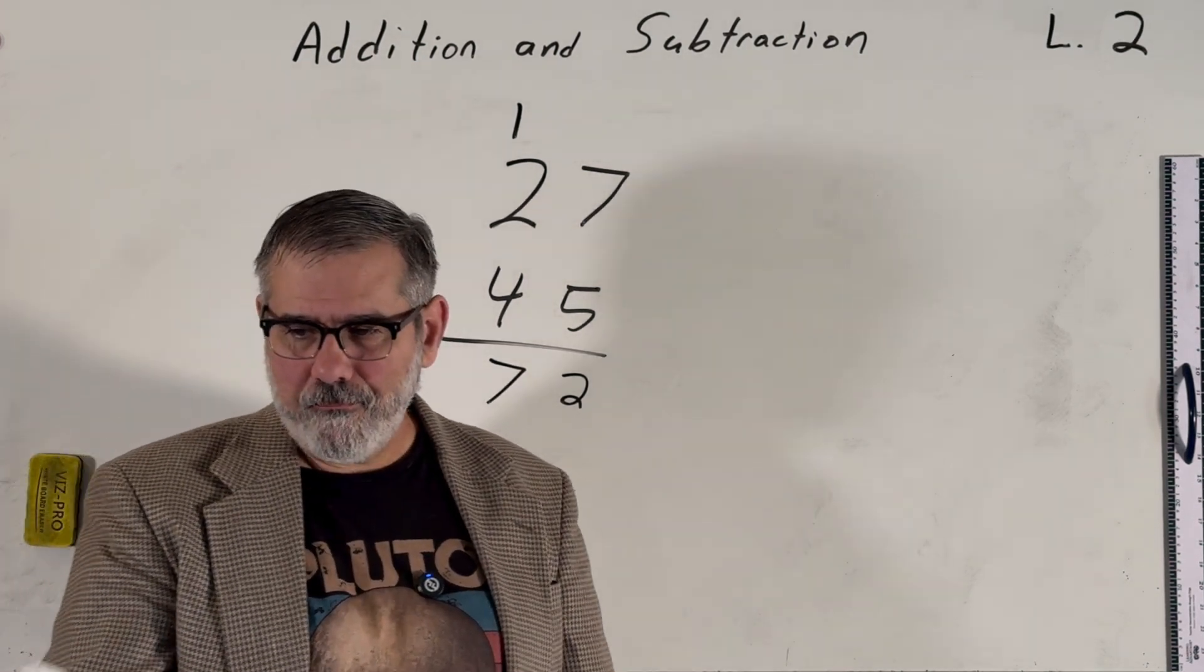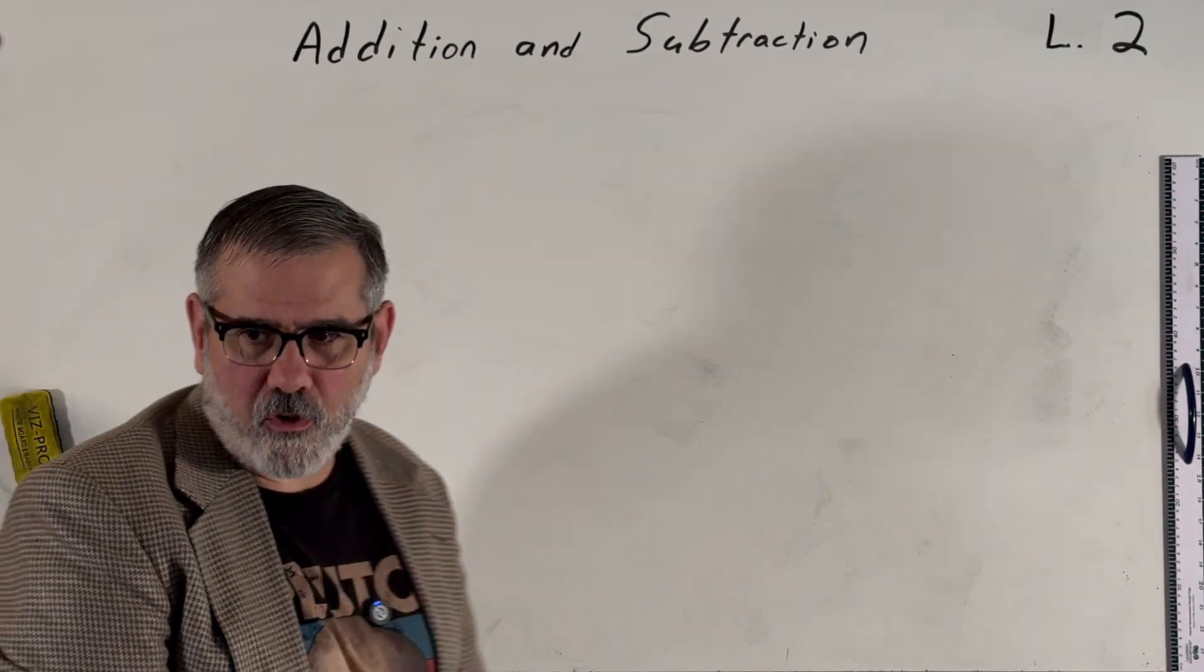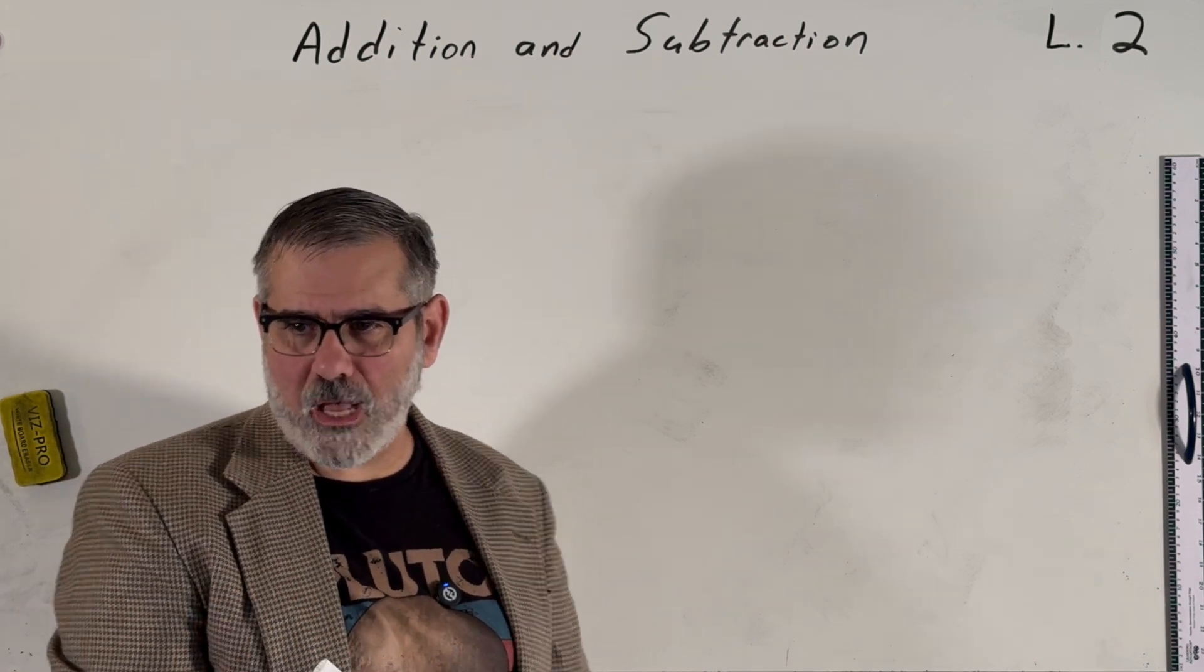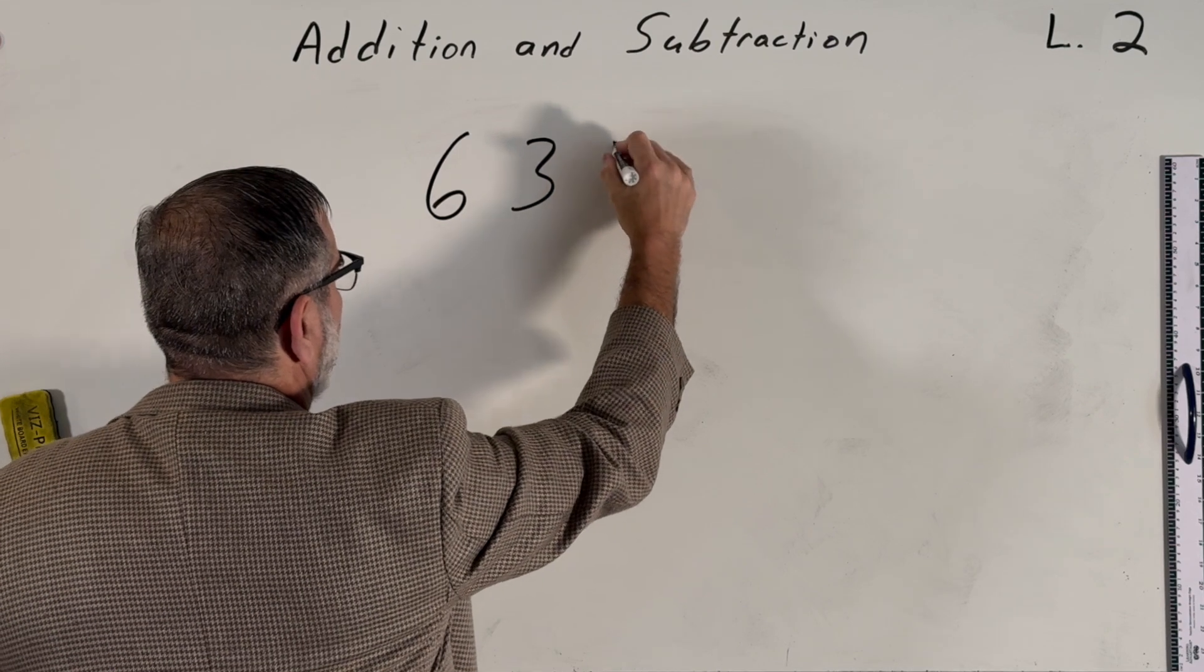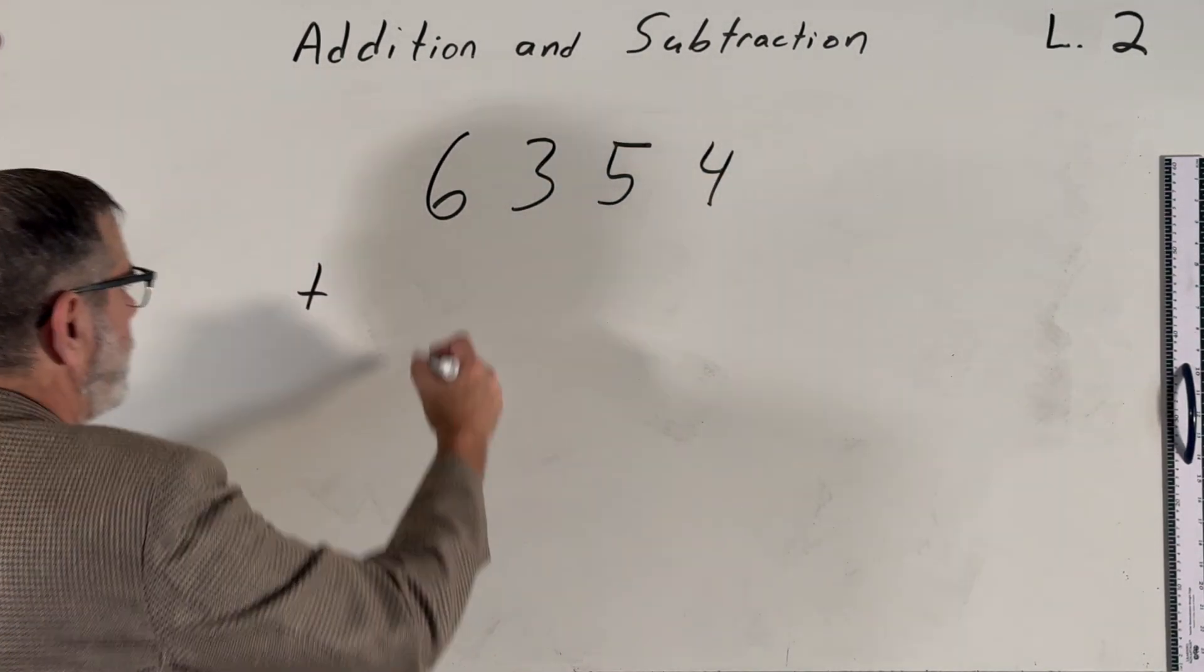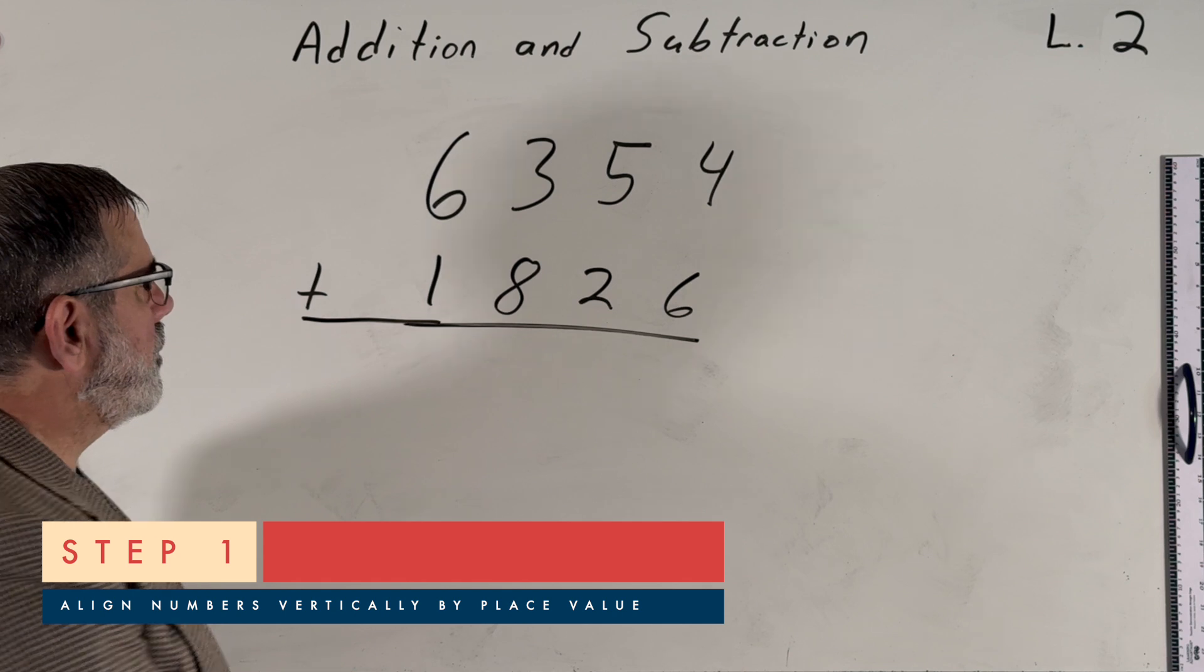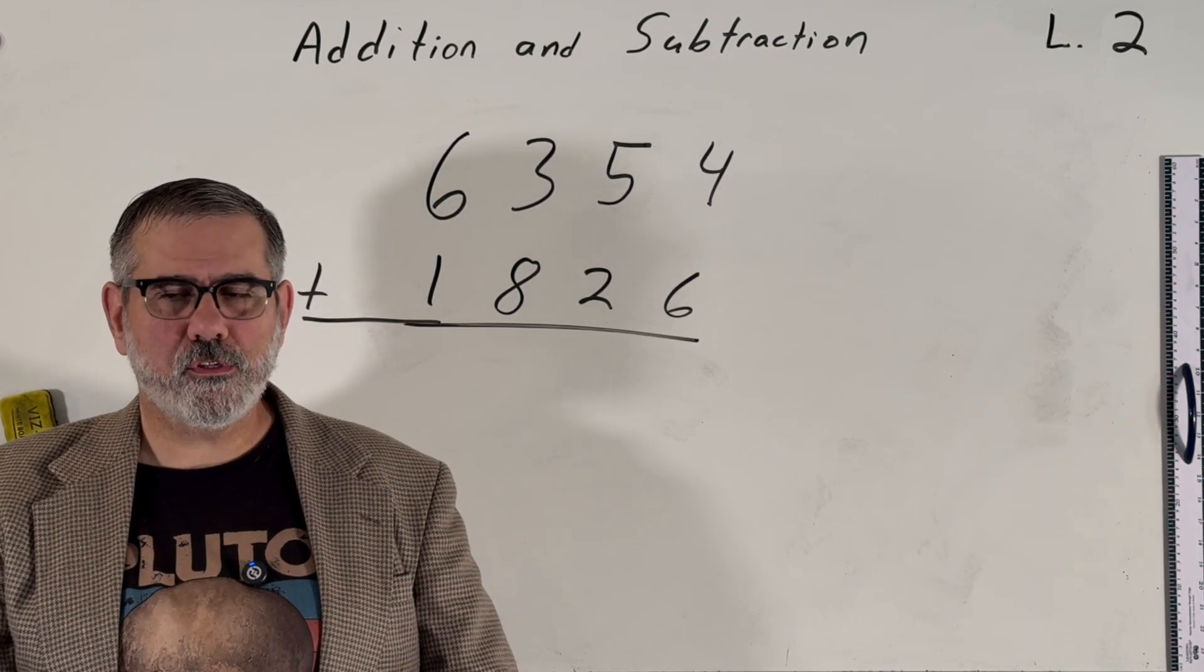Let's let you try one. So what I suggest doing is you take a crack at this problem, you pause the video if you're at home, and then we'll resume and I'll work it out for you. So let's do 6,354 plus 1,826. And I've already set the problem up for you by aligning them vertically by place value. So pause the video now and try this at home.